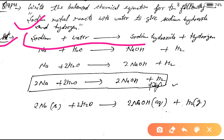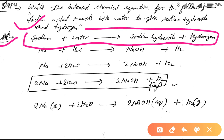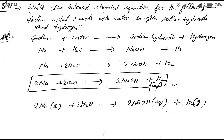The word equation is: sodium reacts with water and gives out sodium hydroxide and hydrogen. This is the word equation. Now we convert this word equation into the formula equation.